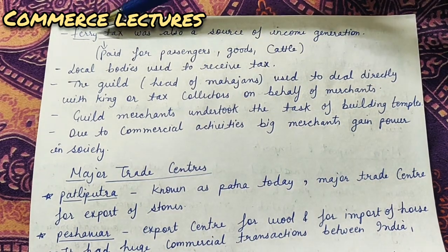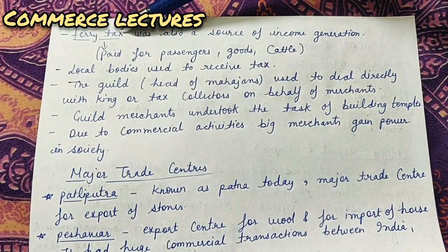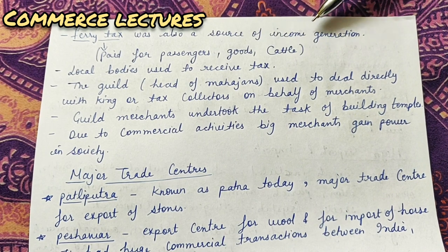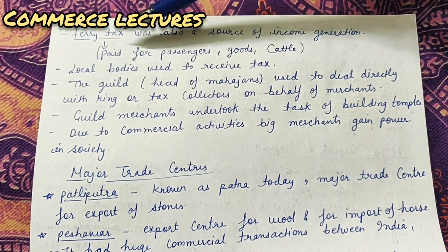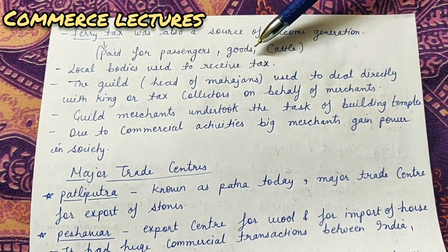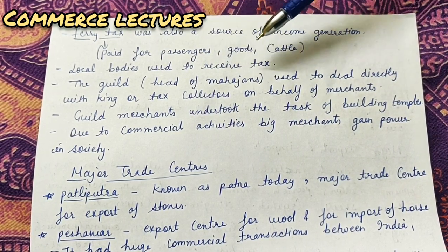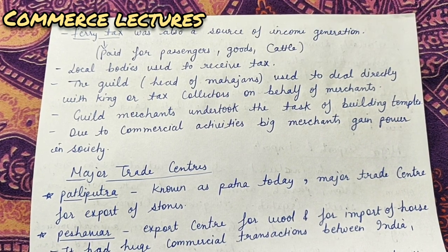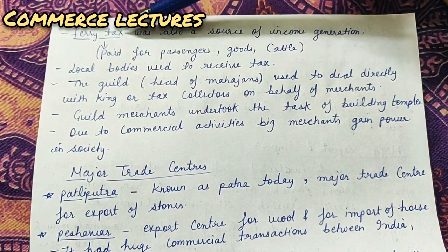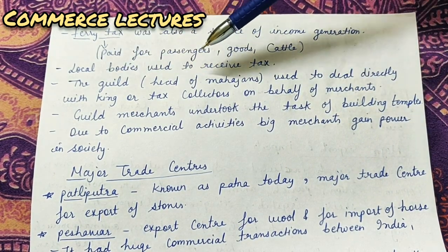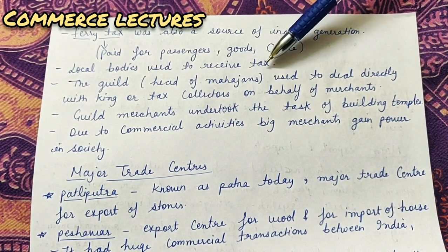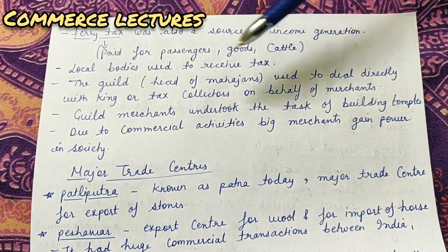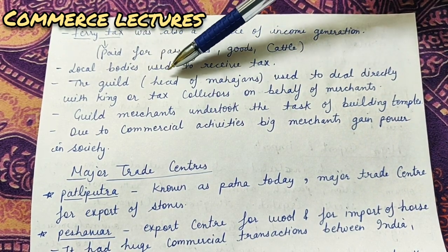At that time, there was a tax called ferry tax. It was also a source of income generation - the government earned quite well from it. This tax was basically paid for passengers, goods, and cattle. If you were moving passengers, goods, or cattle somewhere, you had to pay a tax for that, which was called ferry tax. Local bodies used to receive this tax - the main government had no role; local bodies were the ones collecting this tax.